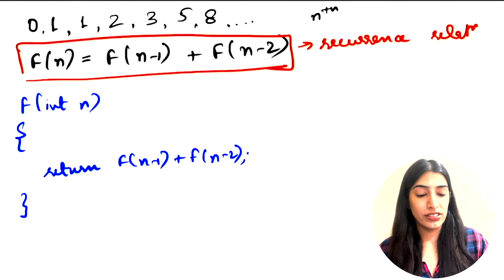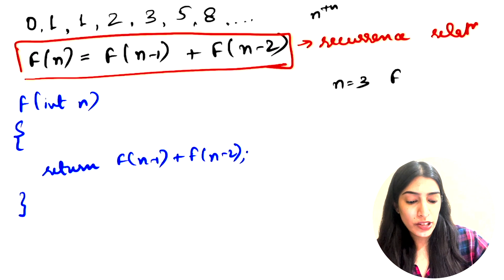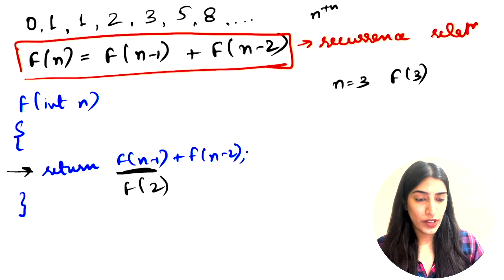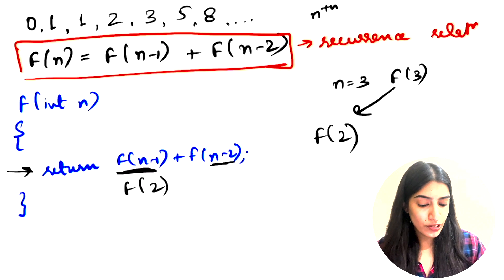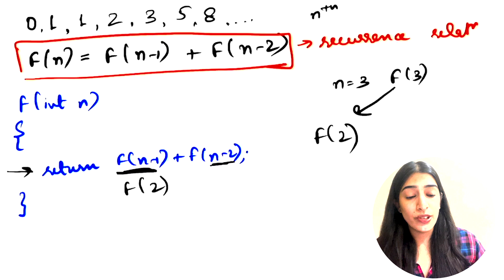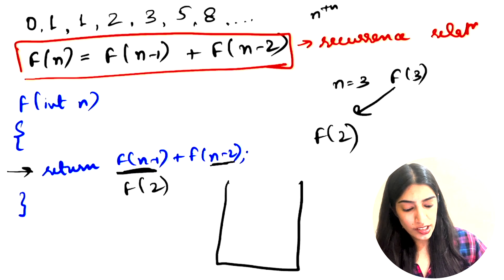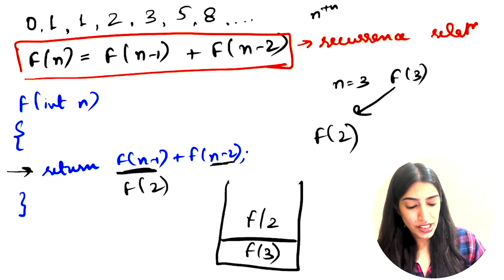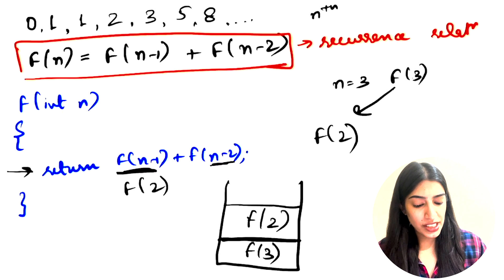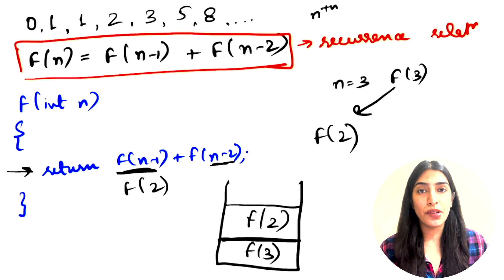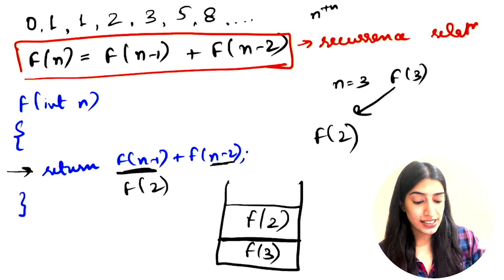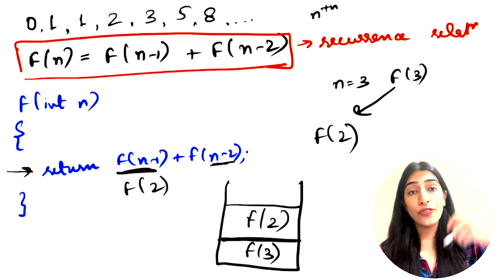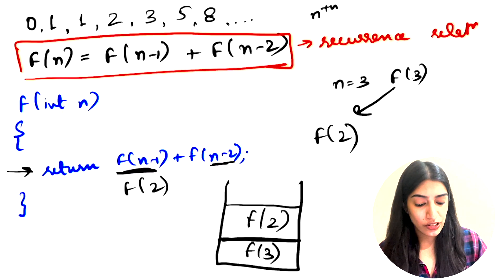Let's try visualizing how this works. Let's say n equals 3, so we call F(3). Now inside this function we call F(n-1), which is F(2). From 3 we are calling for 2. Now let's look at how our stack looks. Initially memory is allocated for F(3), and since F(3) is still executing, memory is allocated on top for F(2). From F(2) we then call F(1), so memory is allocated on top for F(1) as well.